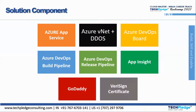Azure DevOps Board is an interface and service through which teams working on Azure can manage their projects throughout the development lifecycle. It allows teams to track their tasks, work status, user stories, backlogs, features, and bugs and defects noticed in the project. Overall project management throughout the development cycle can be done through Azure DevOps Board.